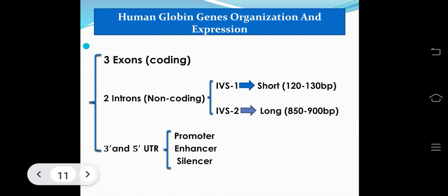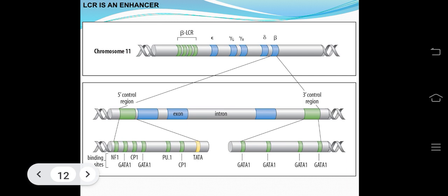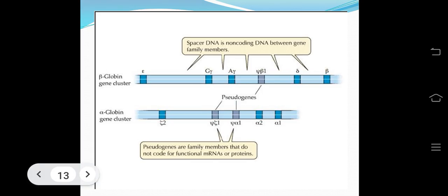Human globin genes have three exons (coding) and two introns (non-coding), plus 5' and 3' UTRs containing promoters, enhancers, and silencers. The two introns — IVS1 (short) and IVS2 (long) — are non-coding. The LCR is an upstream enhancer for the beta globin cluster. Transcription factor binding sites include NF1, CP1, PU1, and TATA box elements. Spacer DNA is non-coding DNA between gene family members. Pseudogenes are family members that do not code for functional mRNA or protein.